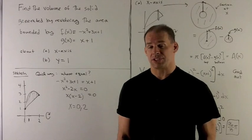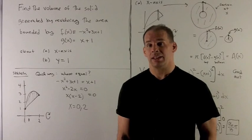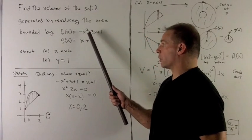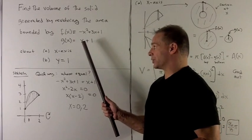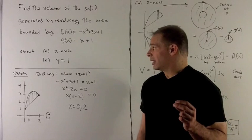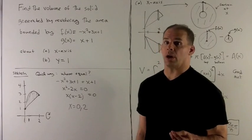We're going to find the volume of the solid of revolution given by rotating the area bounded by the two curves: f(x) = -x² + 3x + 1 and g(x) = x + 1, about both the x-axis and then the horizontal line y = 1.